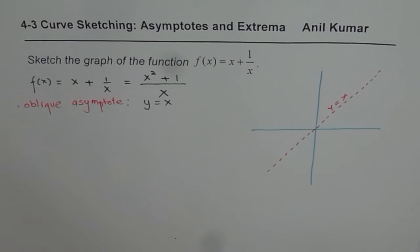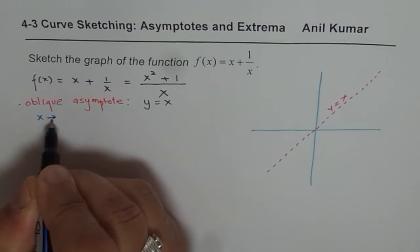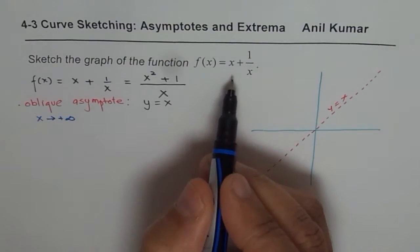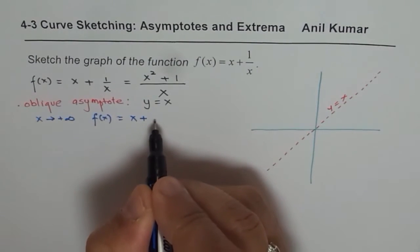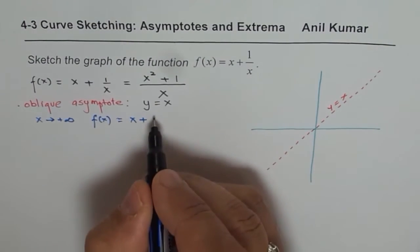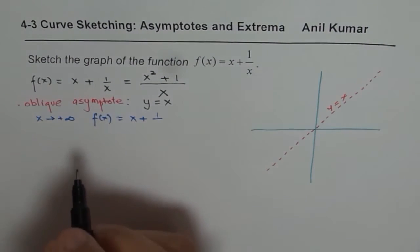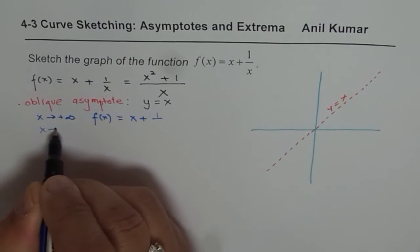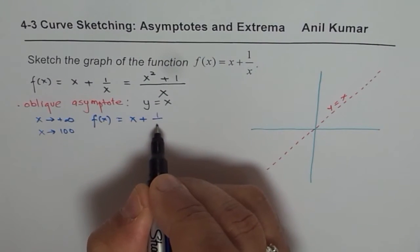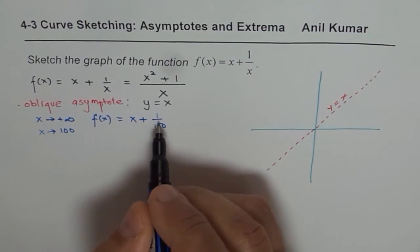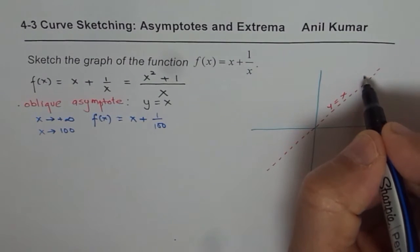To find the behavior at infinity: if x approaches positive infinity, say x = 100, then f(x) = 100 + 1/100, which is more than x. So it is approaching the asymptote from above as x approaches positive infinity.